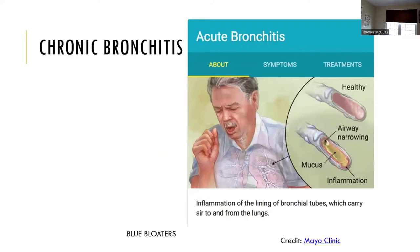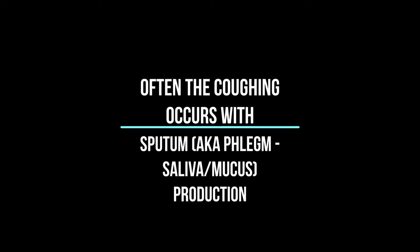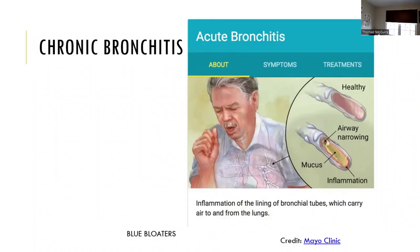Then we have chronic bronchitis, which is long-term inflammation and swelling in the bronchial linings. That leads to an overproduction of mucus secretions. The characteristic sign of chronic bronchitis is frequent coughing. A lot of times this can be related to cigarette smoking, but it can also result from other environmental irritants.